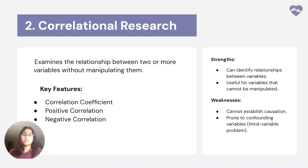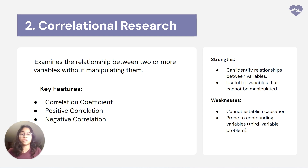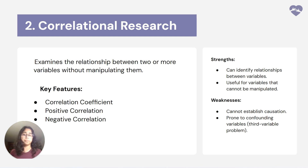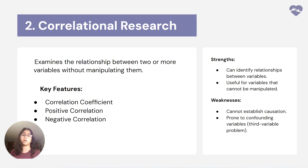Let's say we're looking at the relationship between technology use and mental health. If a teenager uses technology for a large amount of time and their mental health is lower, we can imagine that as technology use increases, mental health decreases — this is a negative correlation. Meanwhile, positive correlation is when both variables increase together, so if a student has more technology to use and their mental health increases, that's a positive correlation.